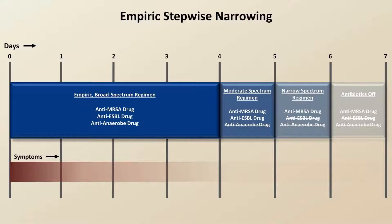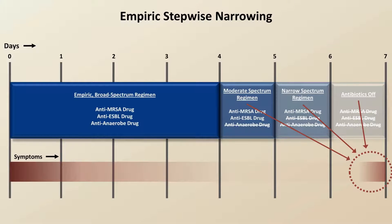The idea is that if the patient worsens after any change, it implies that the change should be reversed. The problem is what one should conclude if the patient worsens about 24 hours after the last antibiotic was discontinued. The quickest conclusion would be that it was the discontinuation of the anti-MRSA coverage that was the problem. Unfortunately, the half-life of that drug may be long enough that it's still in the patient's system, and it might take more than a day, or even two or three days, for an incompletely treated infection to recur. Therefore, while it could be the discontinuation of MRSA coverage that was the problem, it could just as easily be the consequence of an earlier narrowing step. In the end, we cannot know, and the most appropriate course of action would likely be to restart all three antibiotics and go back to square one.